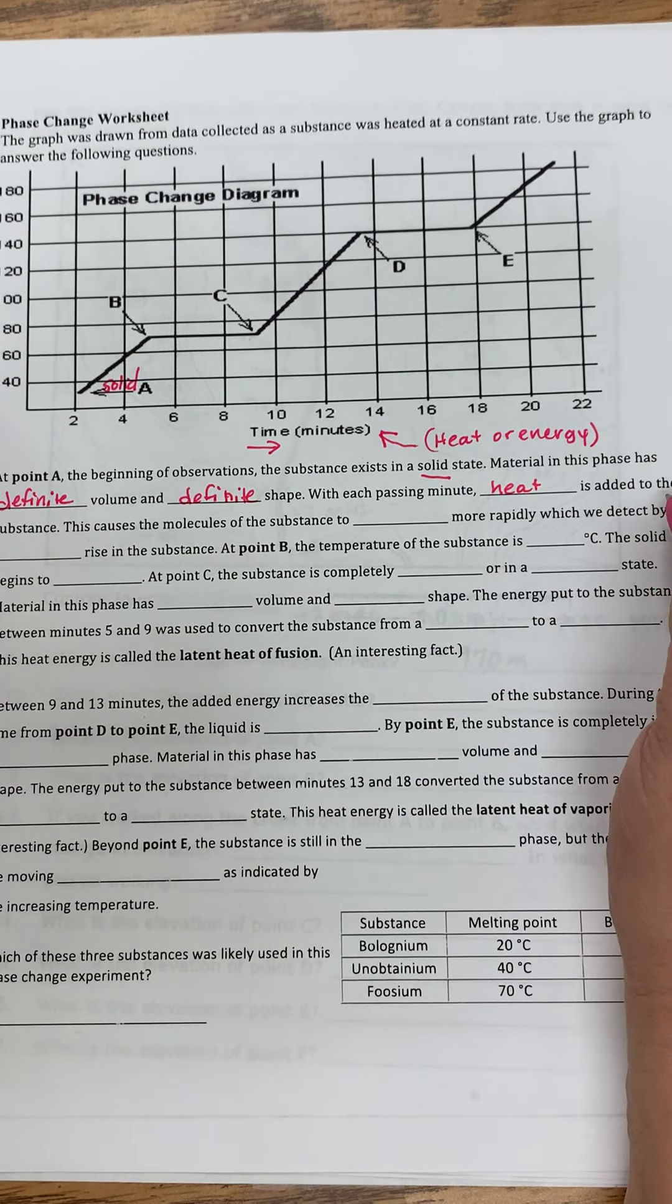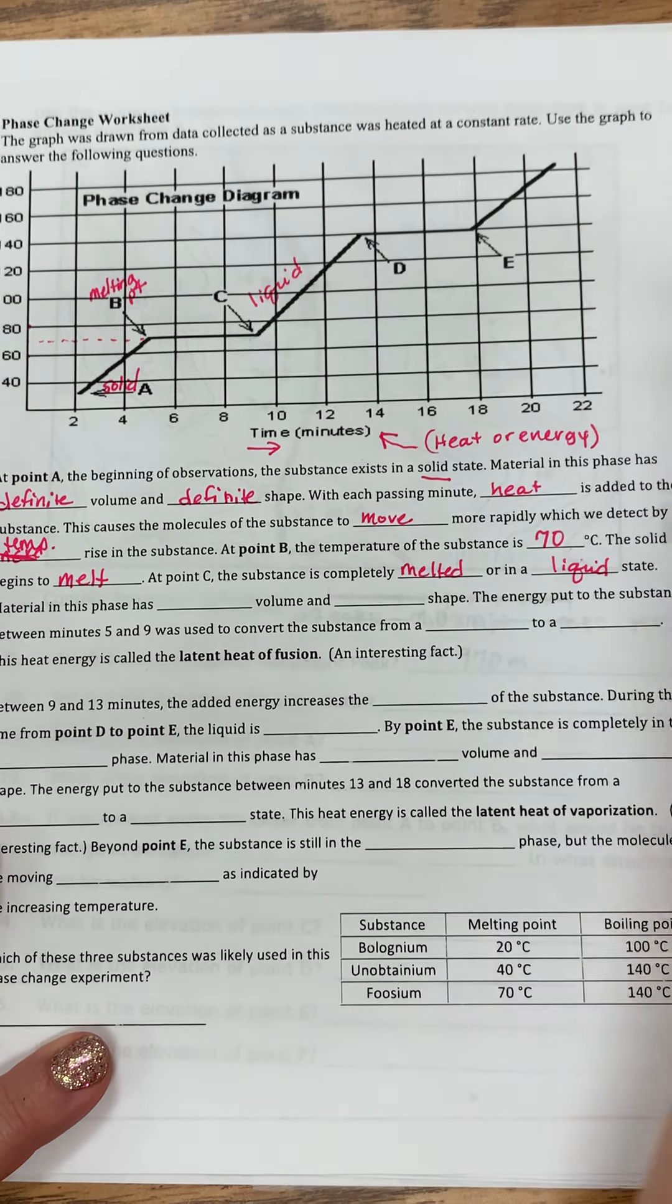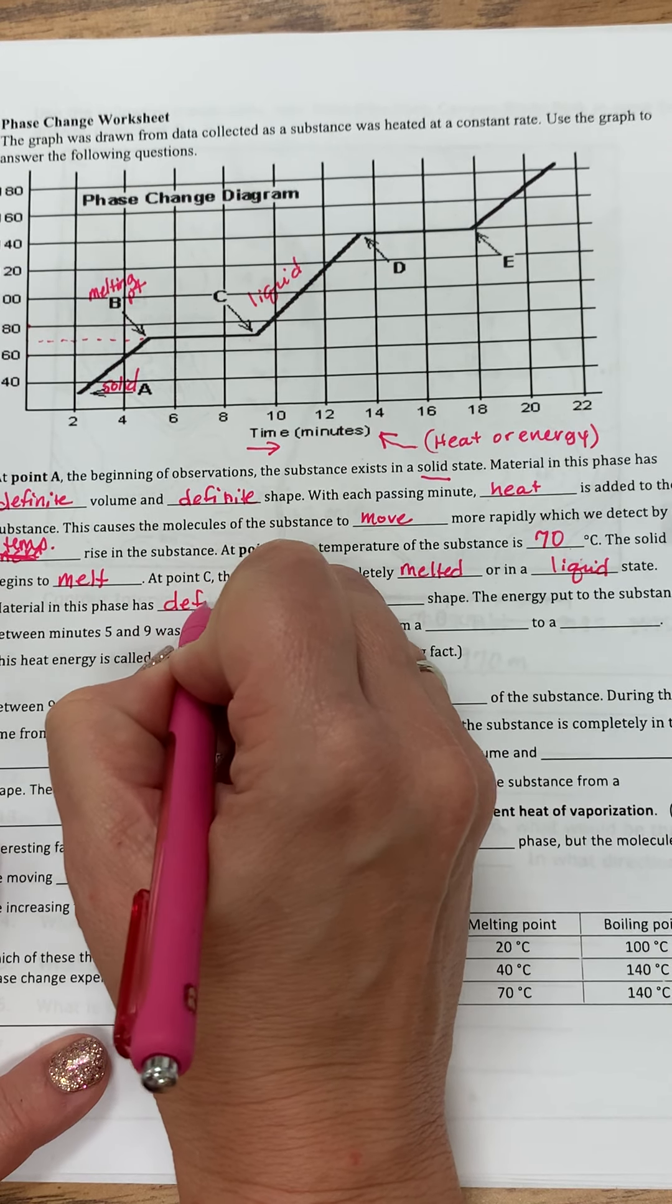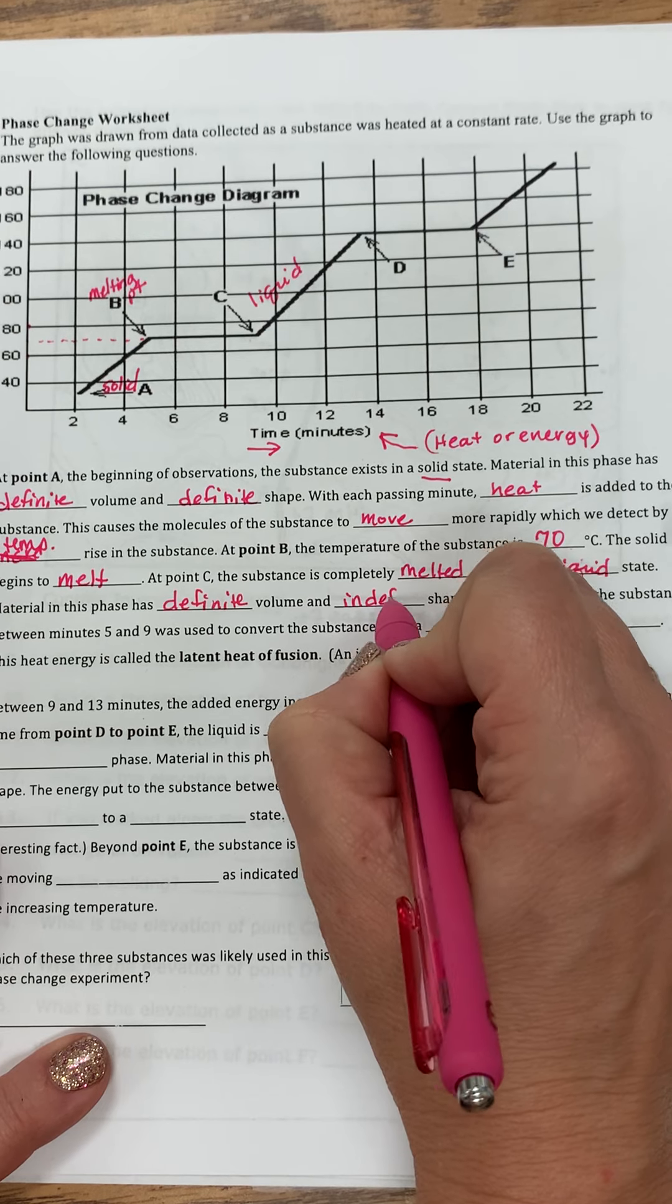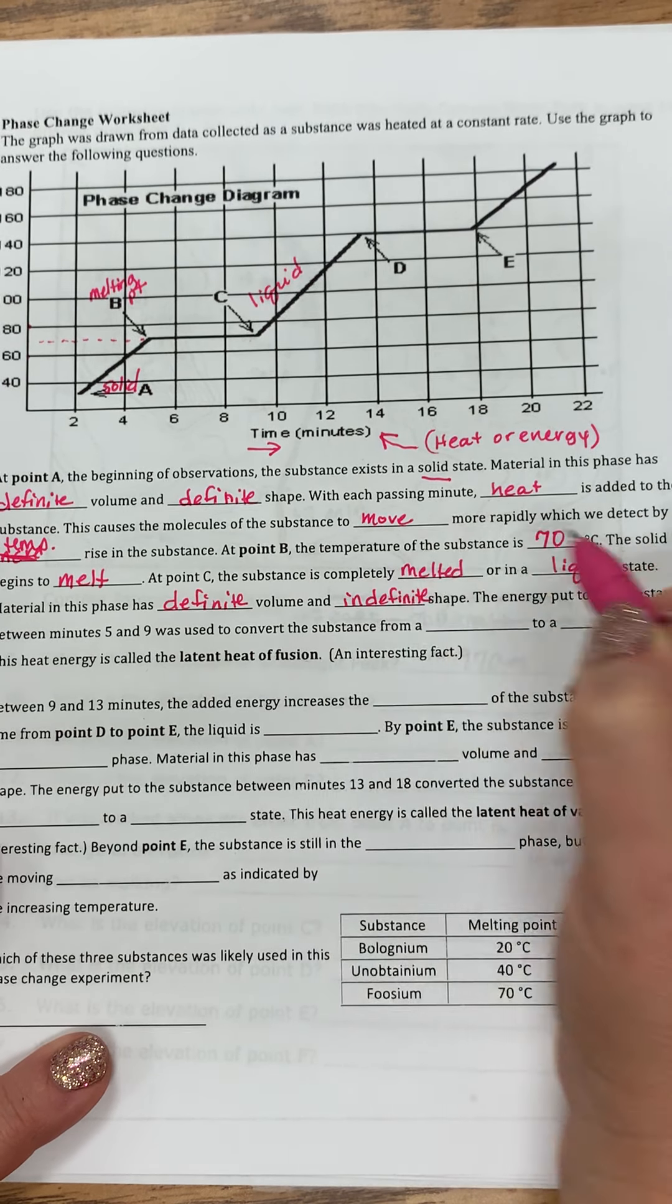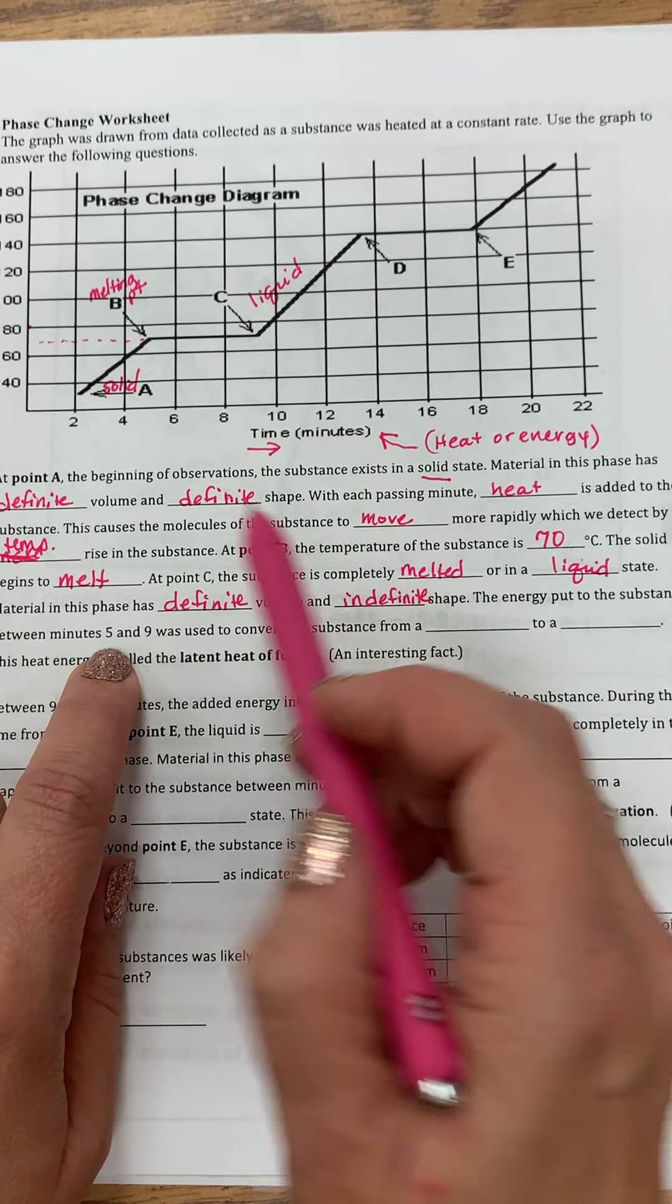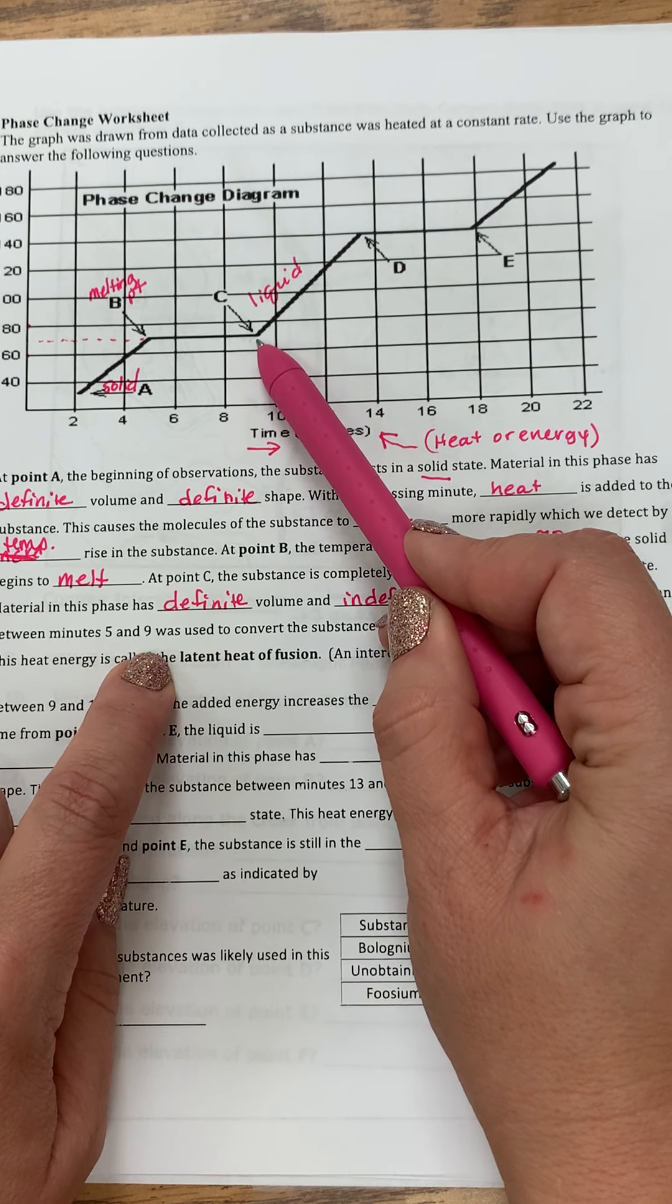At point C, the substance is completely melted or in a liquid state. So at point C on up, it is a liquid. A material in this phase has a definite volume, but an indefinite shape because it will take on the shape of the container that it's in.